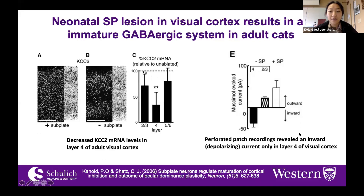They also found that perforated patch recordings revealed a depolarizing current only in layer four. GABAergic neurons are traditionally hyperpolarizing; however, in a lesioned subplate in layer four, they found it to be depolarizing.